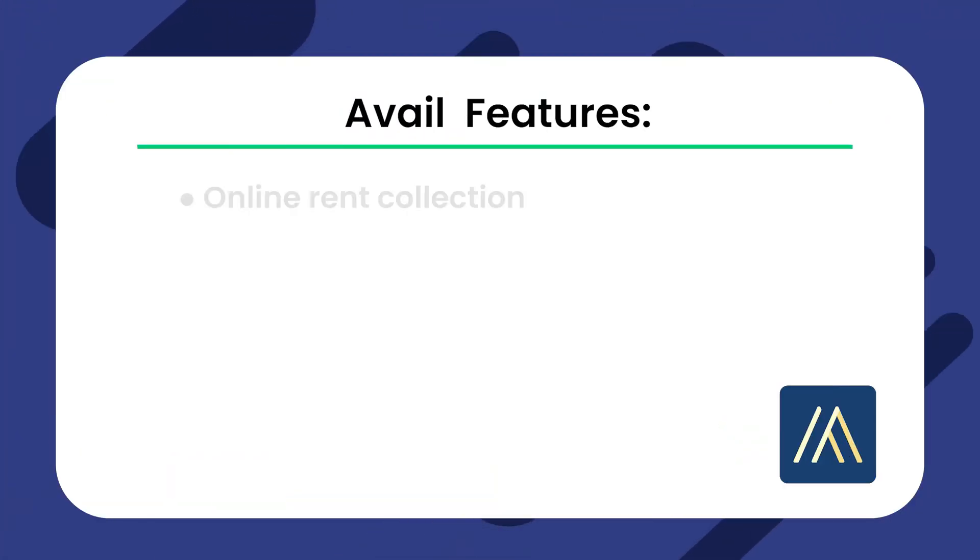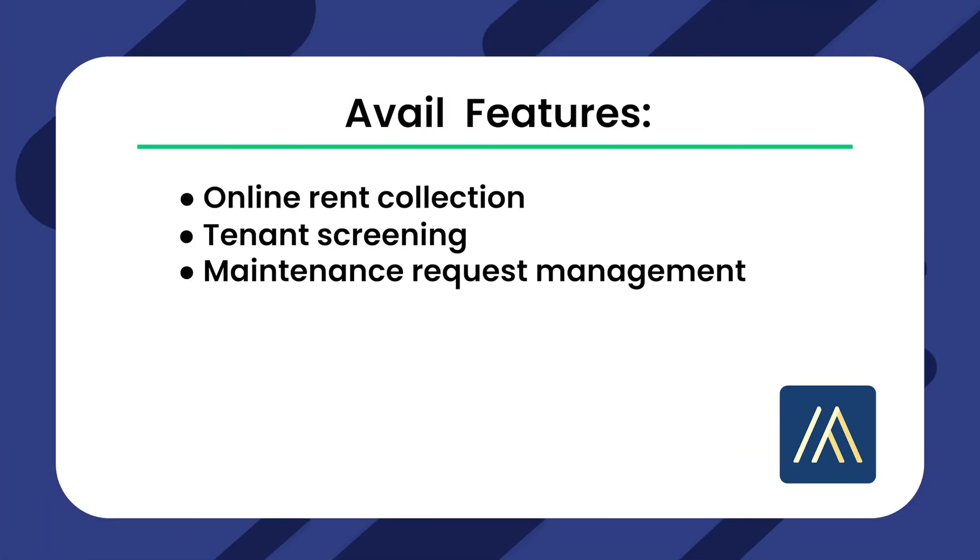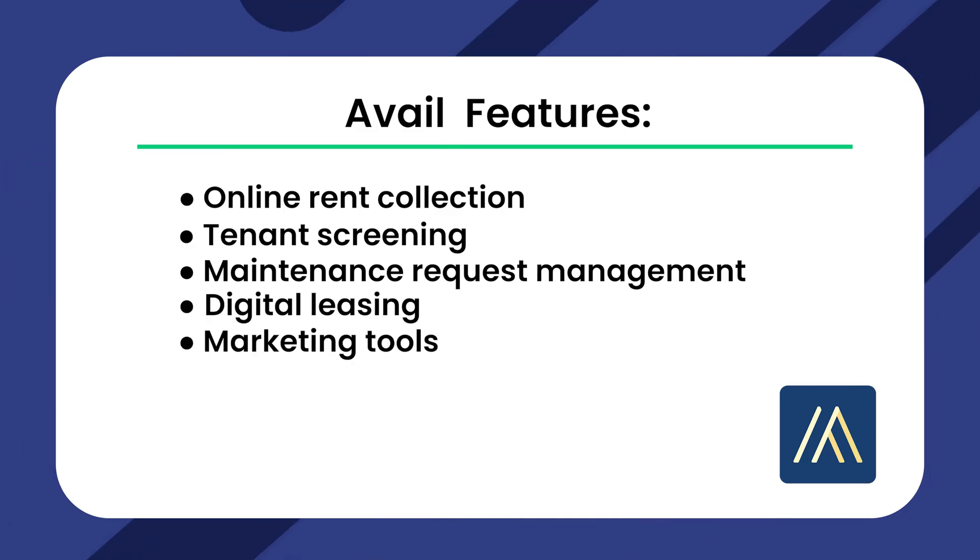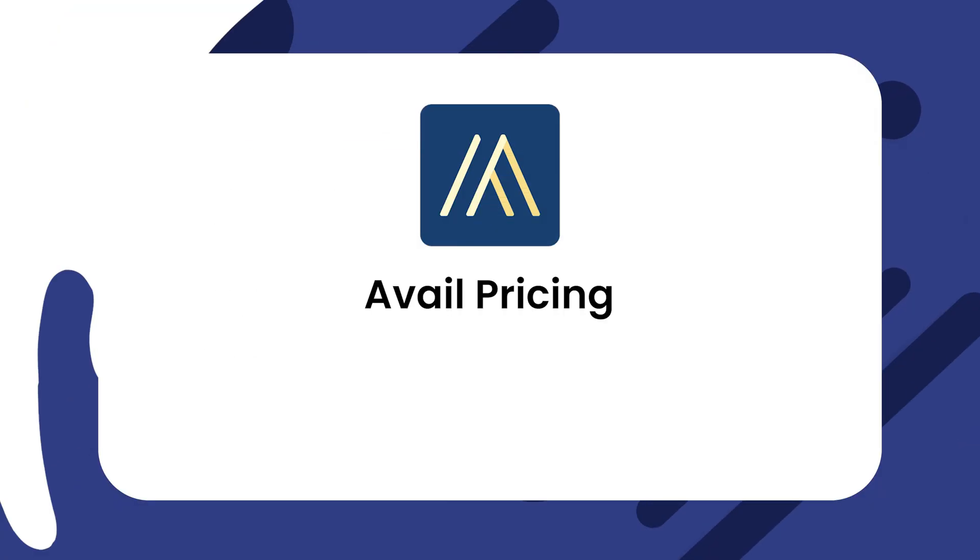Avail is another software for managing properties that is intended for those on a budget. Its user-friendly interface makes it super easy to navigate and take advantage of its features. Avail features include online rent collection, tenant screening, maintenance request management, digital leasing, and marketing tools. Avail's pricing is what makes it stand out — it offers a 100% free plan to get started regardless of how many units you have. This plan has very limited features but might be a good option for newer landlords or property managers. For those who want more features, Avail offers a paid plan for $7 per unit per month.